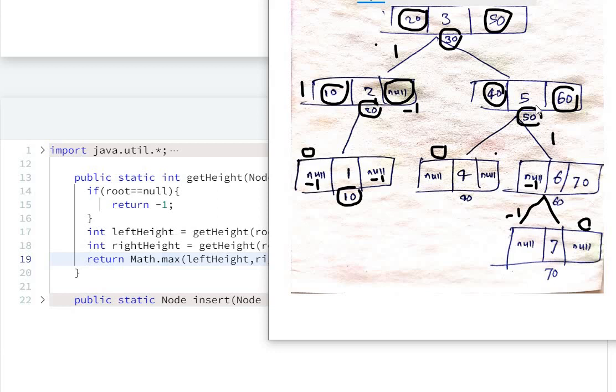0 will be the height, and on its left there is nothing, so minus one. Now maximum of these two is 0, so 0 plus 1 equals 1. So here at 60, the height is 1.